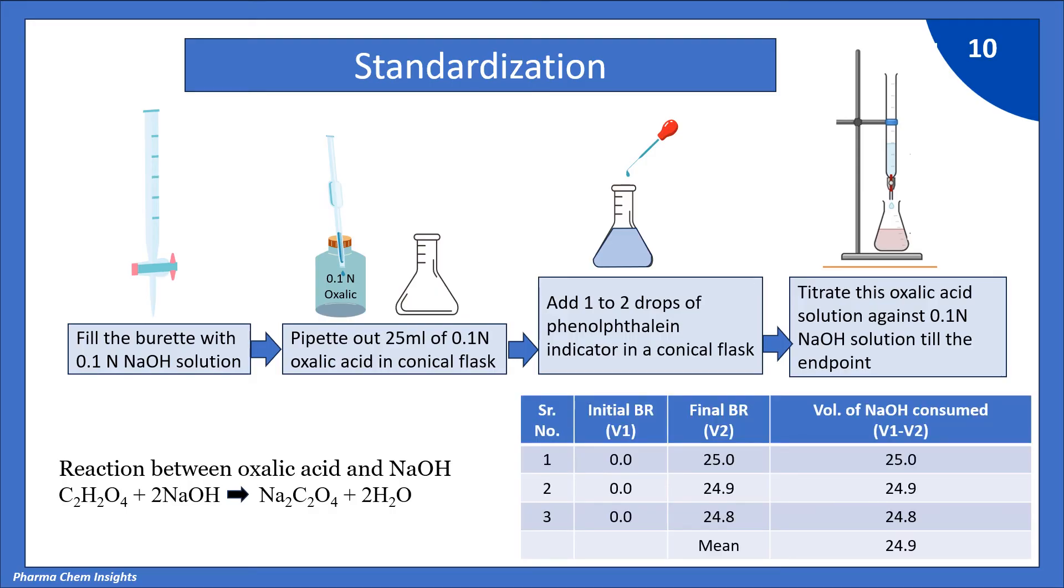We have to take 3 readings for standardization for accurate measurement. So initial burette reading will be 0. First burette reading we get is 25, second is 24.9 and third is 24.8. So volume of NaOH consumed is final burette reading minus initial burette reading. So we get the values 25, 24.9, 24.8. So average is 24.9.